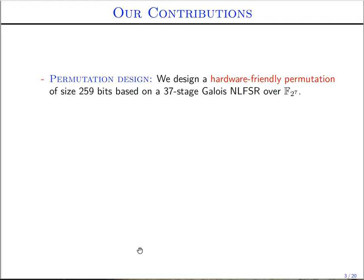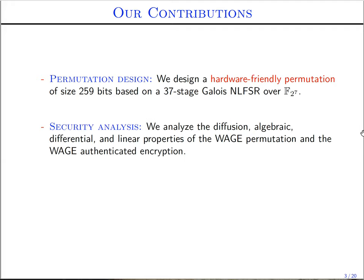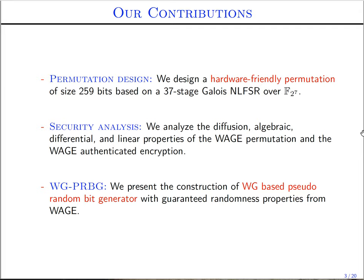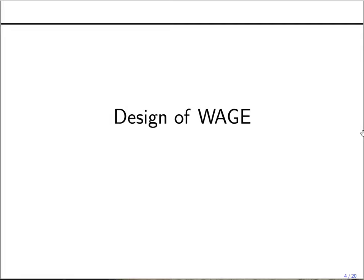Our contributions are threefold. First, we present the design of a hardware-friendly permutation of state size 259 bits, based on a 37-stage Galois nonlinear feedback shift register over the finite field GF(2^7). We analyze the security of the WAGE permutation and the WAGE authenticated encryption scheme against well-known attack vectors such as diffusion, algebraic attacks, and differential and linear distinguishers. We also show the construction of a WG-based pseudorandom bit generator from WAGE, which has certain theoretical guaranteed randomness properties by design.